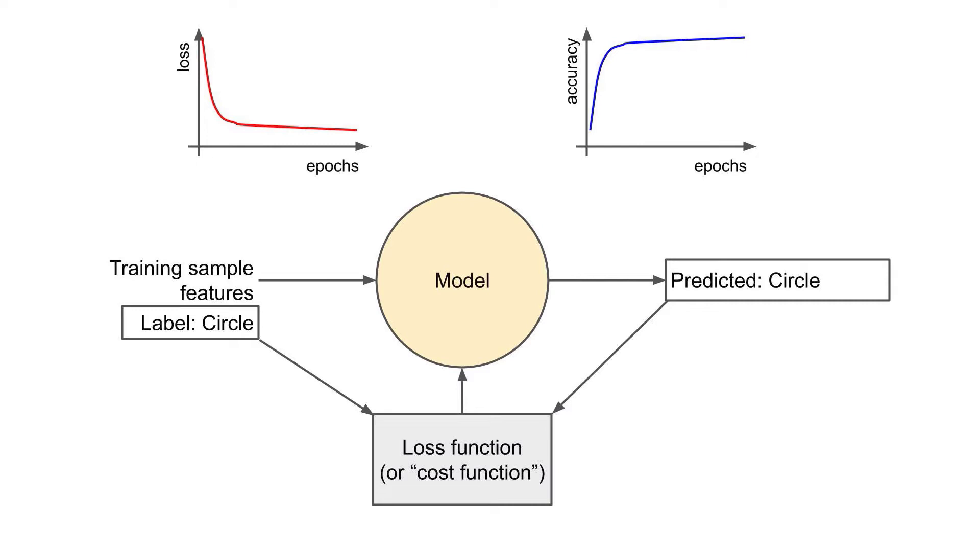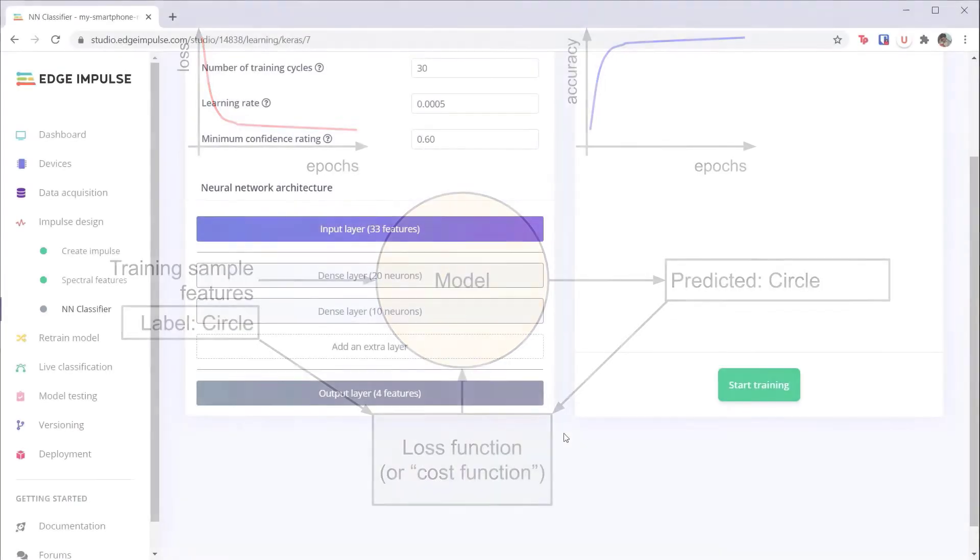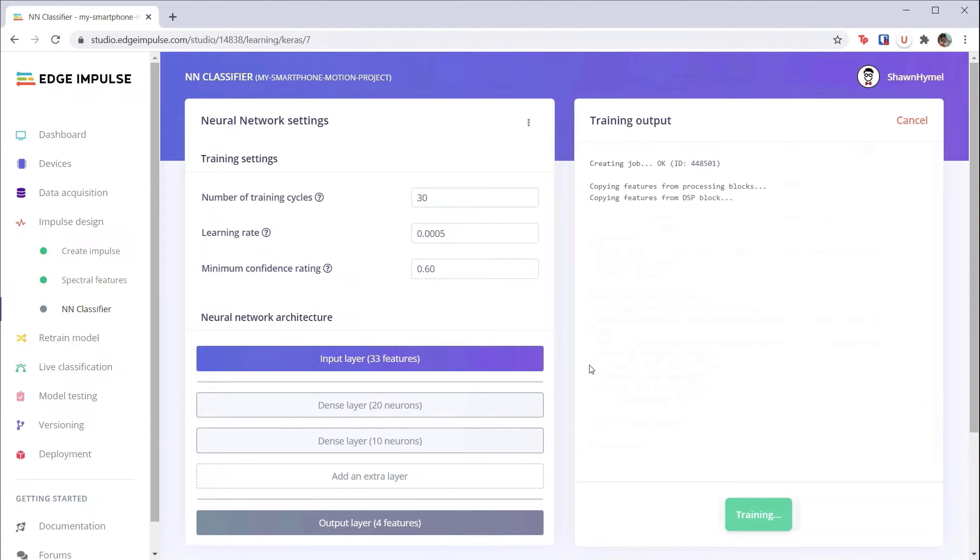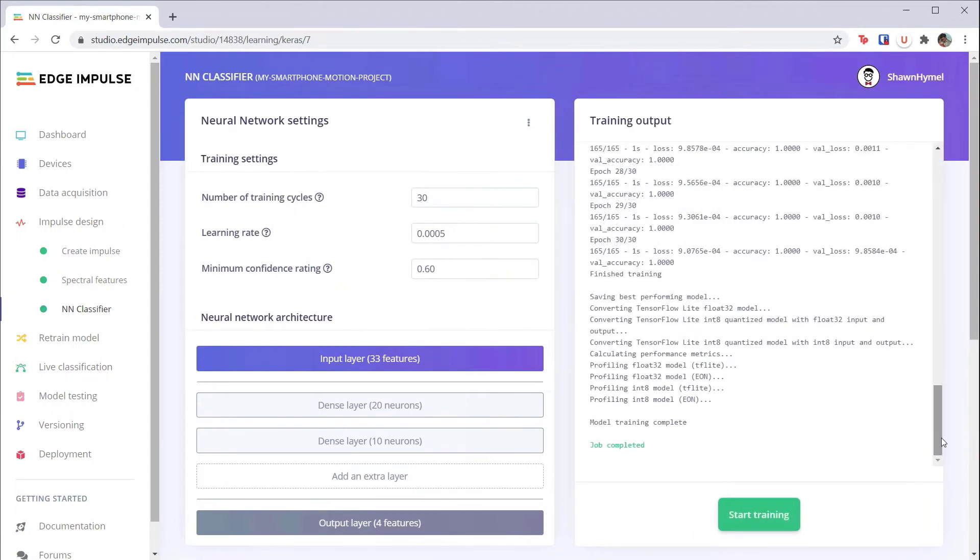We can use the validation set to check how well the model performs on unseen data. We applied this concept by using Edge Impulse to fit or train a model to our accelerometer data.